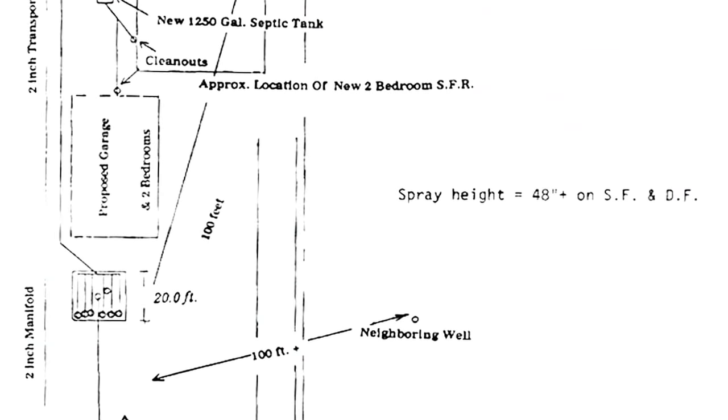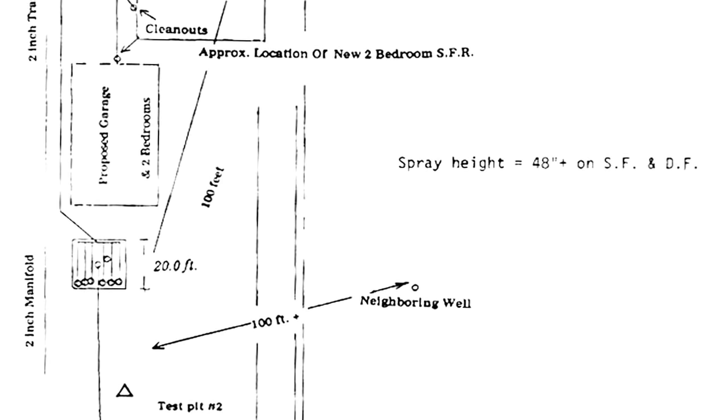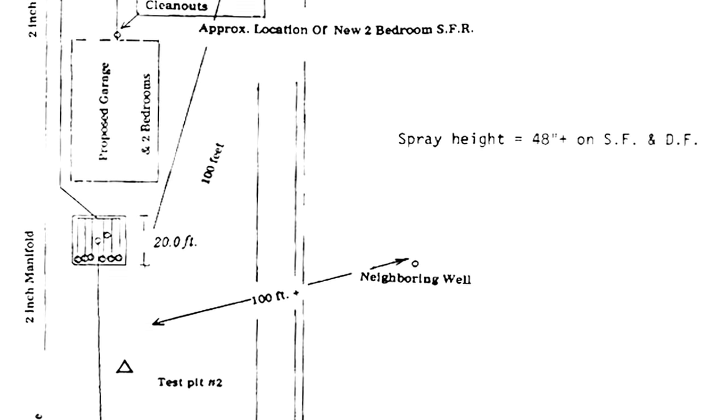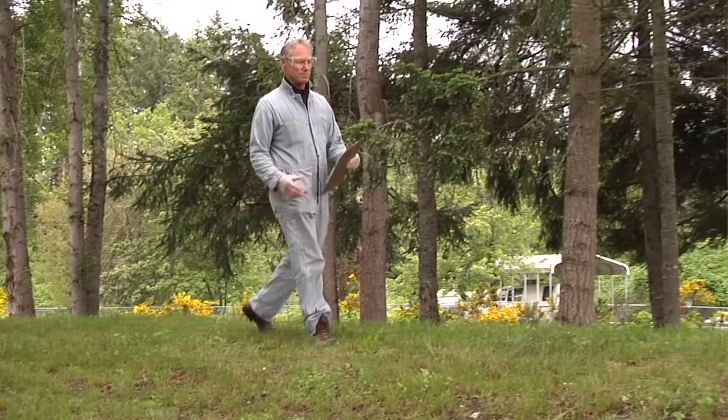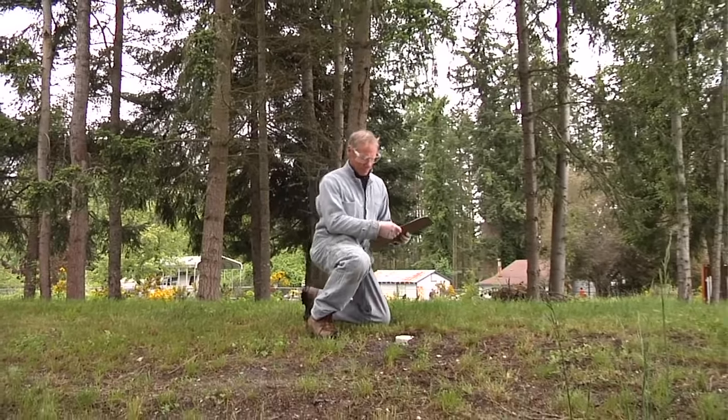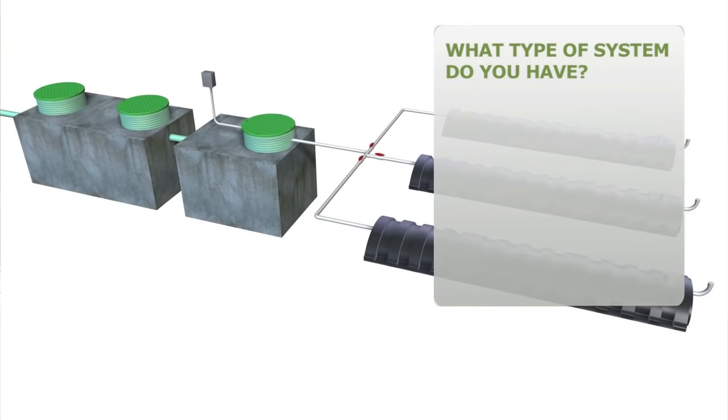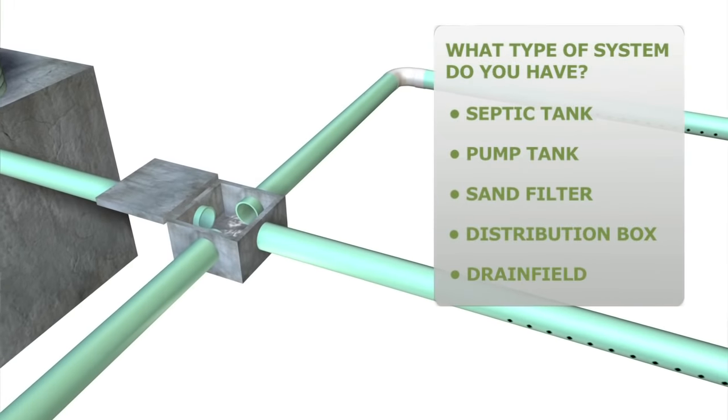Septic systems need regular maintenance, just like your car or your home. First of all, know where all the components of your system are located on your property. An as-built or record drawing is a technical diagram of your septic system — check with your local health department to obtain a copy. The record drawing can tell you what type of system you have, where the components are located on your property, and provide other useful information, though record drawings are not always accurate so make sure you verify it's correct. Depending on the type of system, you'll want to know the location of your septic tank, pump tank, sand filter, distribution box, and drain field.